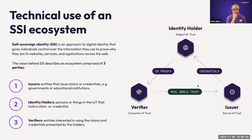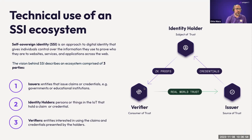You're probably familiar with the triangle of trust — the three actors: the issuer of credentials, the identity holder, and the verifier. The main difference in Polygon ID is that you don't directly present the credential data to the third party, the verifier. Instead, you present a zero-knowledge proof derived from the credential data to the third party. That is the main difference in our DID method.